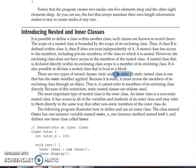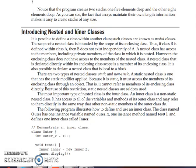A static nested class is one where we declare static as a keyword for that class. When a class is declared static, it must access only its enclosing class object and cannot refer directly to other member functions — which is a restriction. Because of these restrictions, we will not use static nested class very often. Non-static nested class is called an inner class — most of the time, 90% of the time, we will use non-static nested class without the static keyword.